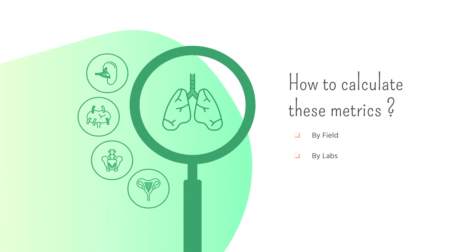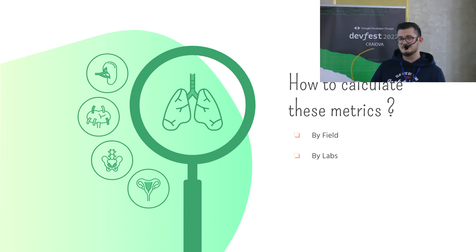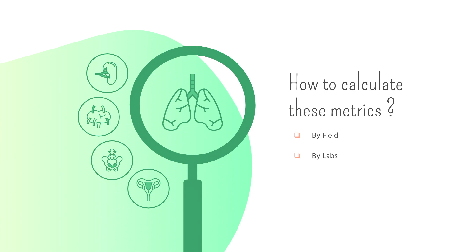Now we know what Core Web Vitals really is, but we don't know how to calculate these metrics. There are two ways. The first way is by fields — field data provides real-world data coming from users in the field. These measurements are called Real User Monitoring and data collected are called Field Data. The second way is by labs — labs data provides information on how potential users may experience your website, and helps developers debug Core Web Vitals metrics.